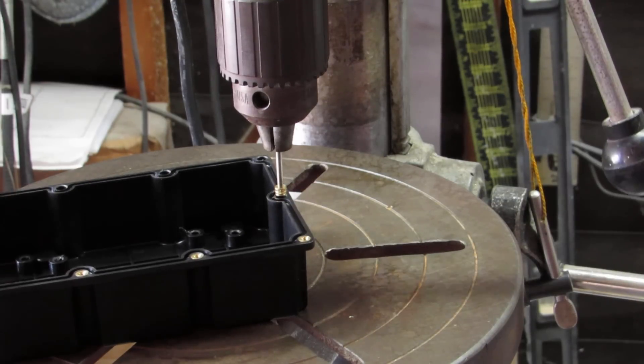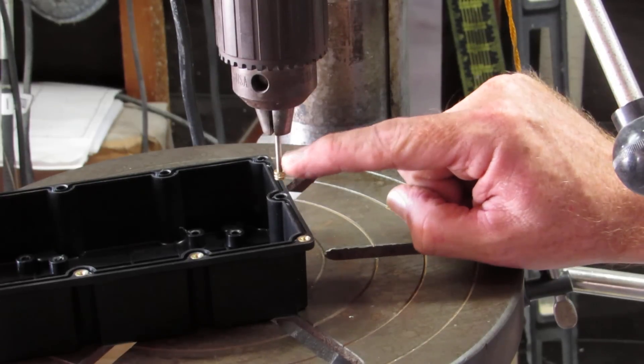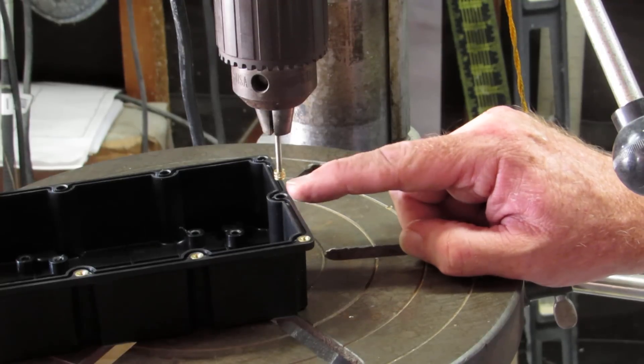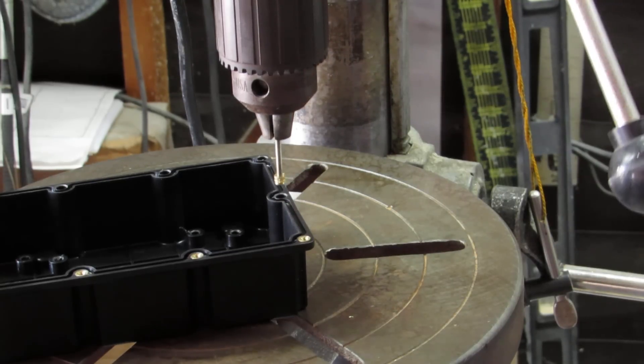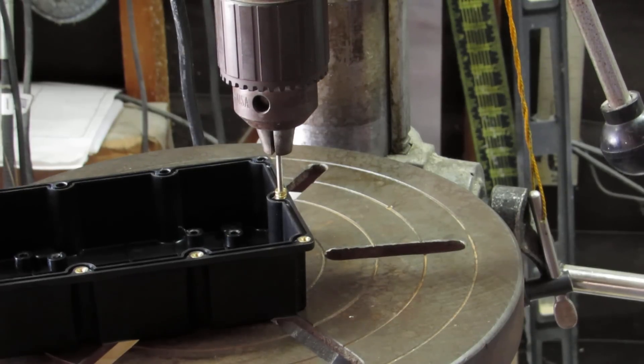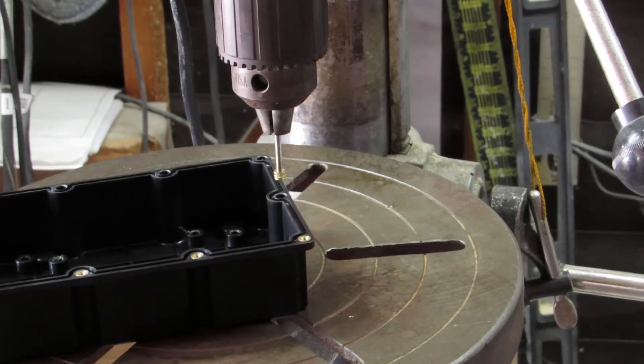This is as far as it'll go right now. But what we're going to do is we're going to heat up this all thread, which will heat up the brass insert, which will melt the plastic slowly. And we'll just keep applying pressure here with the drill press and it'll eventually go all the way down to the perfect seating position.